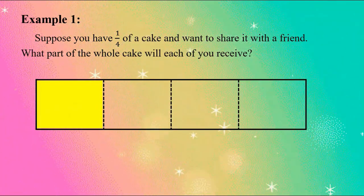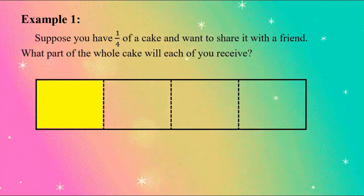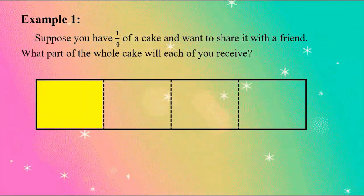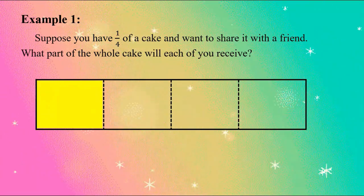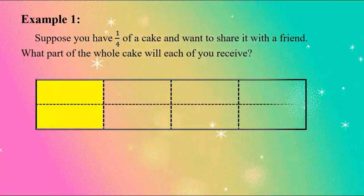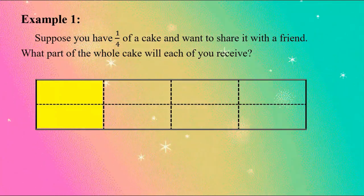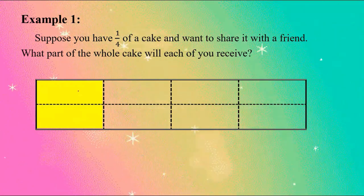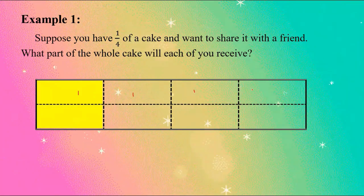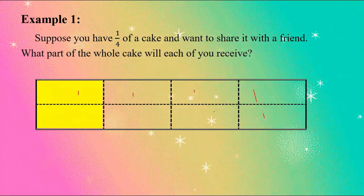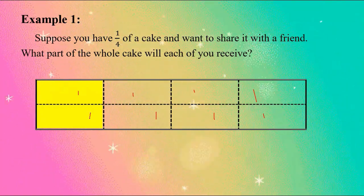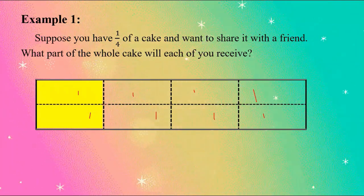The shaded part represents the amount of cake you have. Since you are sharing it with a friend, there are two of you dividing that piece. We divide that part into two equal parts horizontally. Now we have eight equal parts in the whole — one, two, three, four, five, six, seven, eight.